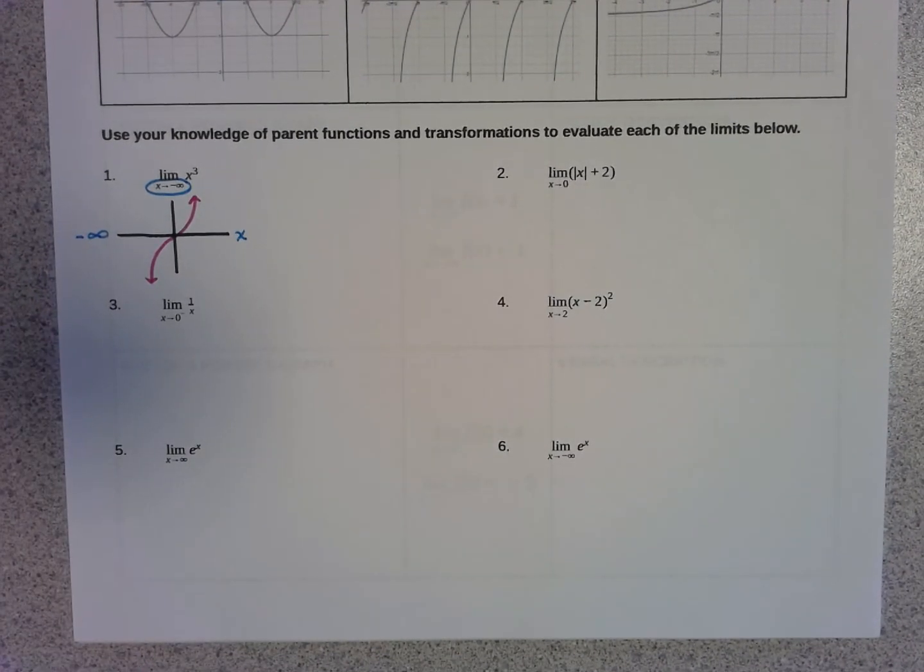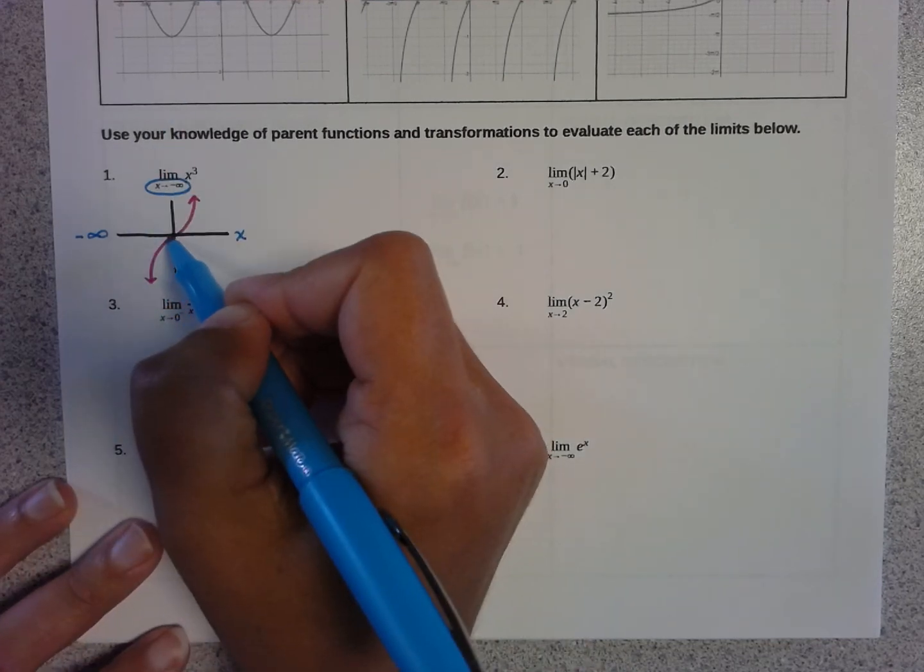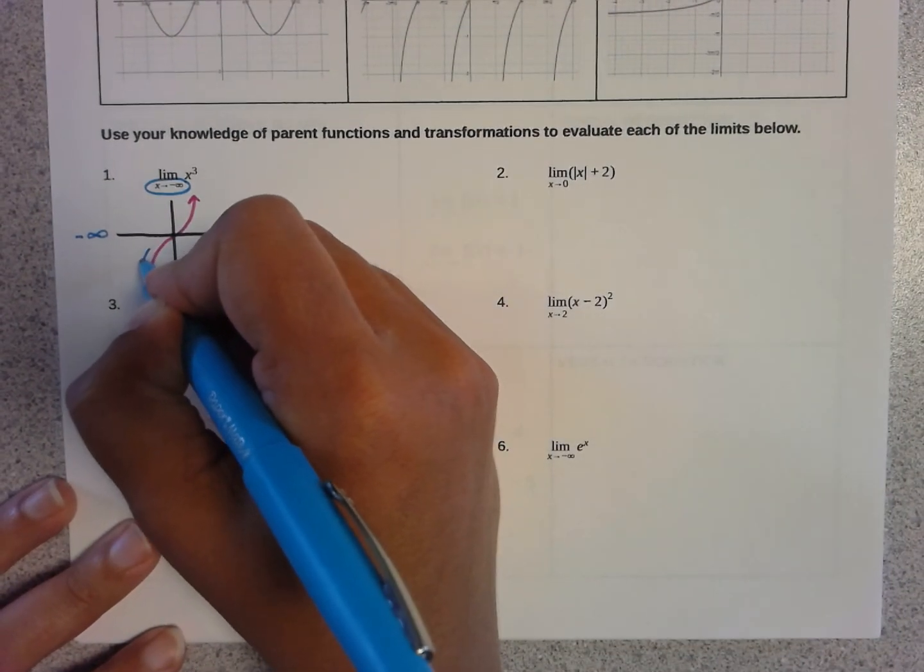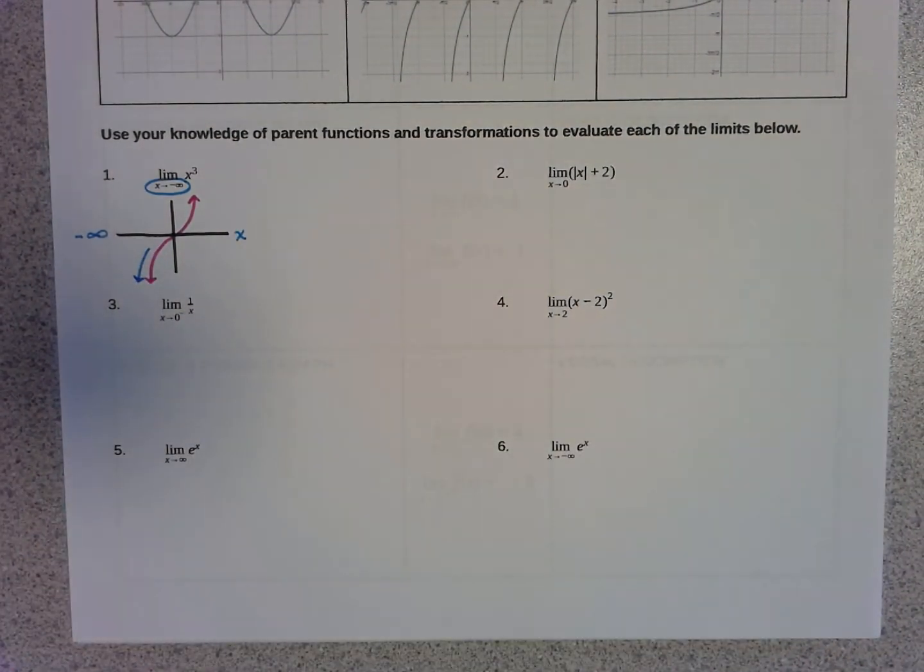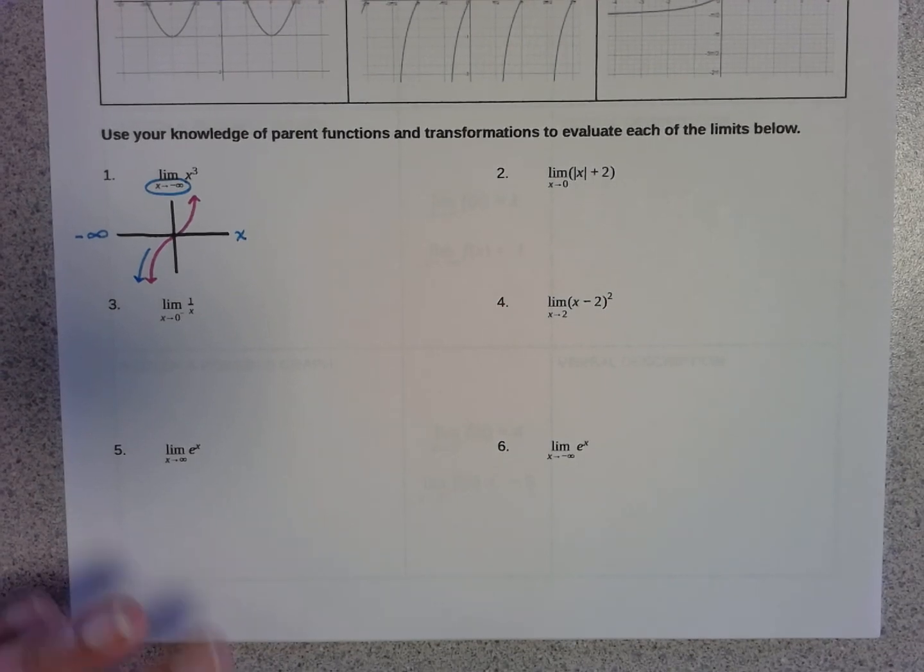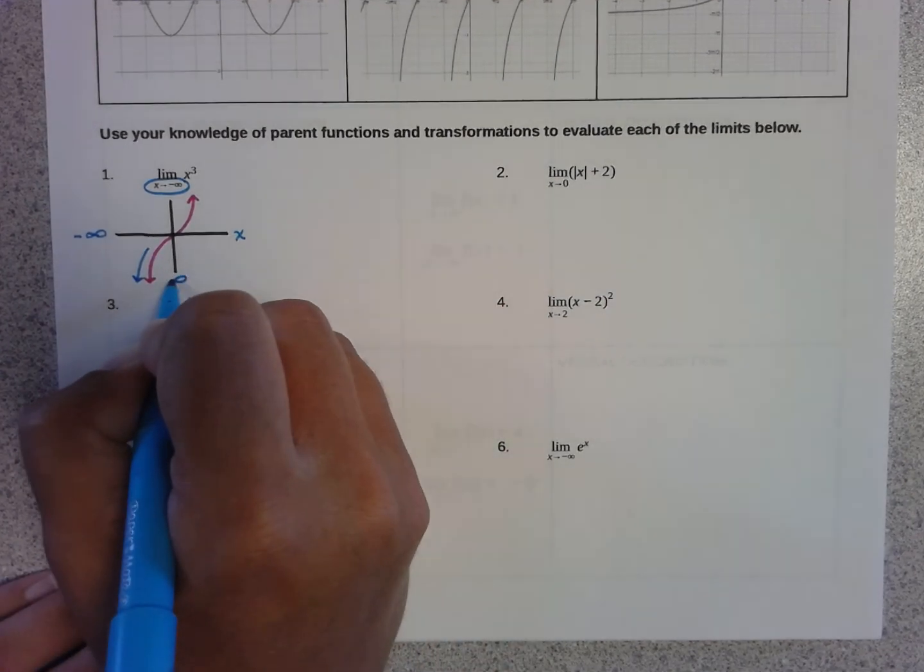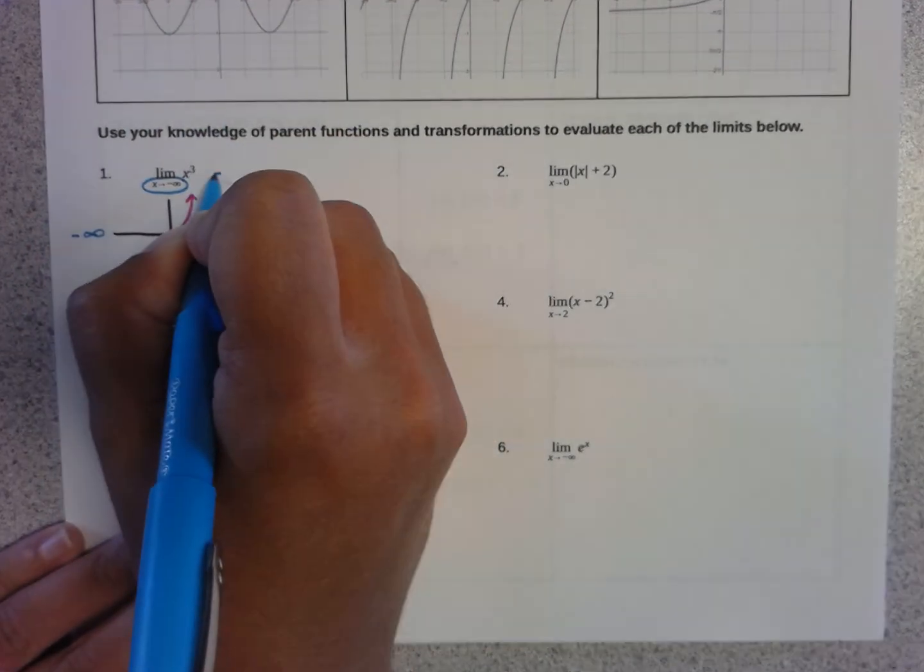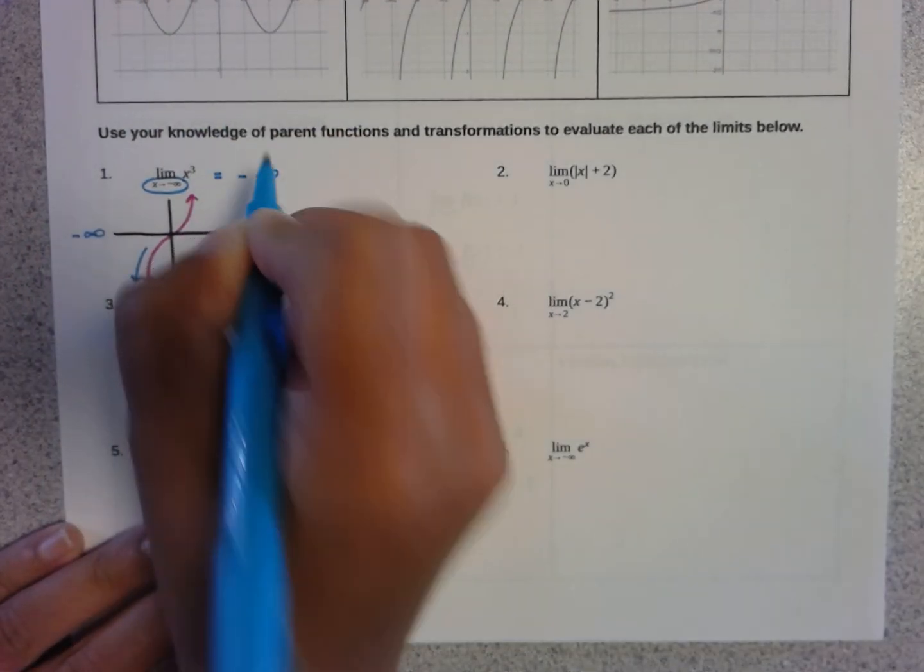So what we're trying to do is figure out what happens to the y values of the function as we go to the left as far as we can imagine. Well, if I follow this graph to the left, I'm also going to be following the graph down. And that means the y values are approaching negative infinity. So the answer to this limit would be negative infinity.